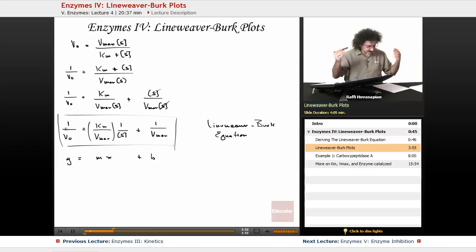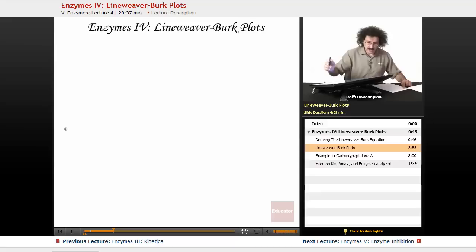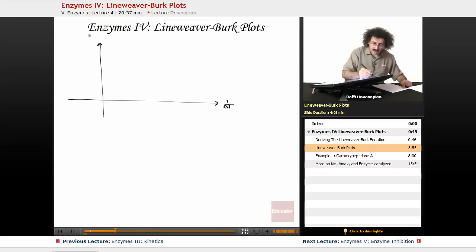You're going to plot this out. When you plot this out, on this axis we have our 1 over S, on this axis we have 1 over V0. When you plot this out, the 1 over V0 versus the 1 over S, you're going to end up with a line. Some straight line like that. Here's what's great.